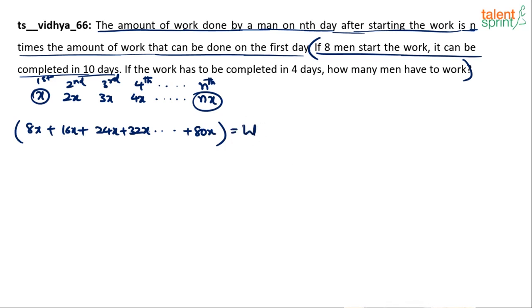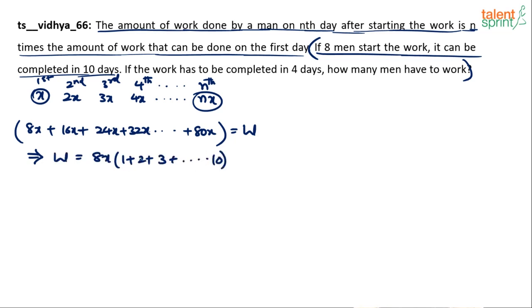The total work W equals: eight men do 8x on the first day; on the second day every man does double, so 16x; third day 24x; fourth day 32x; on the 10th day 80x. Taking 8x common, the total work = 8x × (1 + 2 + 3 + ... + 10). The sum of the first 10 numbers is 55, so total work = 55 × 8x = 440x.